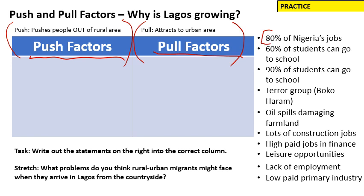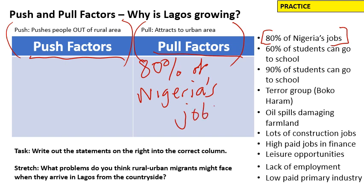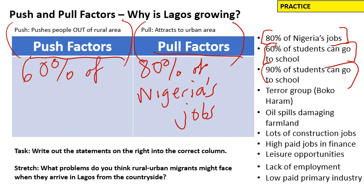80% of Nigeria's jobs — were they found in the countryside or the city of Lagos? Well, they were found in Lagos. So 80% of Nigeria's jobs is a pull factor to the city of Lagos. Now, 60% of students can go to school — let's compare that with 90%. 60% of students is in the rural area, and that is pushing people out of the rural area. So put '60% of students can go to school' as a push factor.